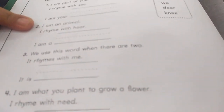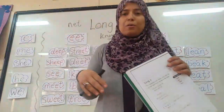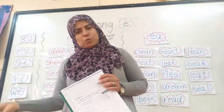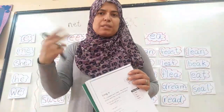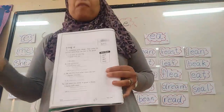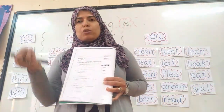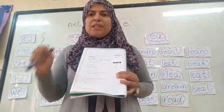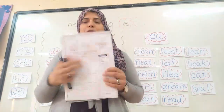Number three: we use this word when there are two. It rhymes with me. Me and you are going to the zoo — wow, it's rhyming! So instead of saying me and you, I say 'we' will go to the zoo. We means me and you, or me and many other people. Number four: I am what you plant to grow a flower. I rhyme with 'need'. If I want to plant a flower in my garden or in a pot, I need to get a seed. Very good, great one, you are super!